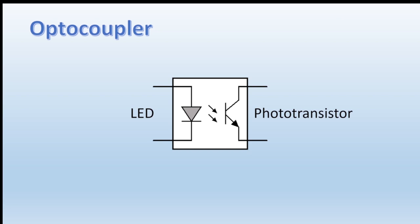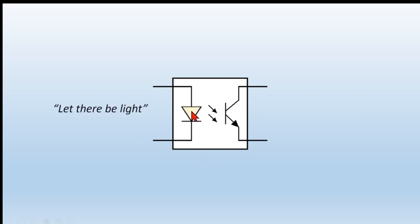So we apply power to the LED and the LED lights up. As a consequence there is a change of state on the output. Let's look at a simple demonstration of this.